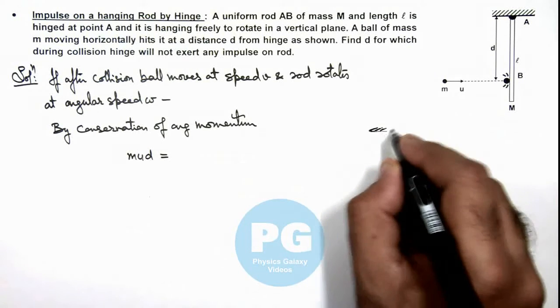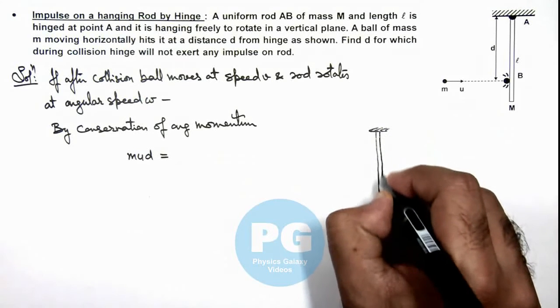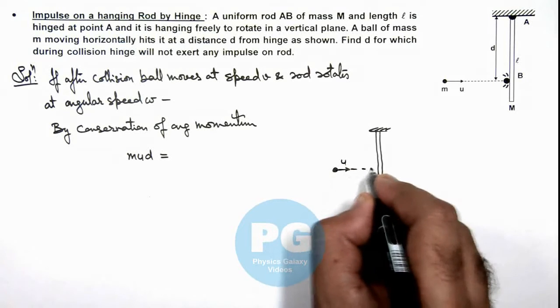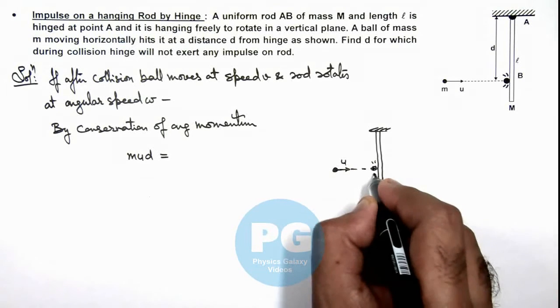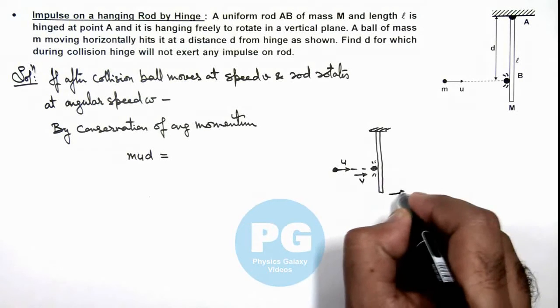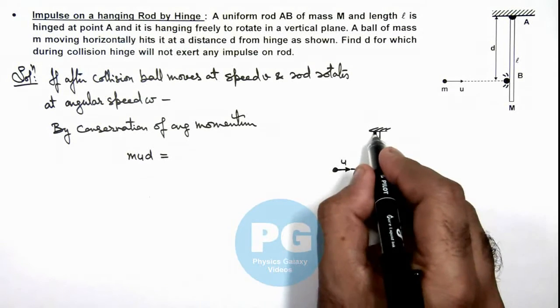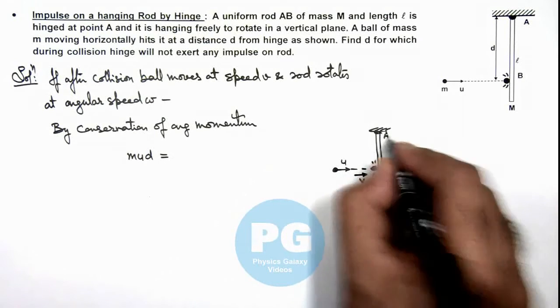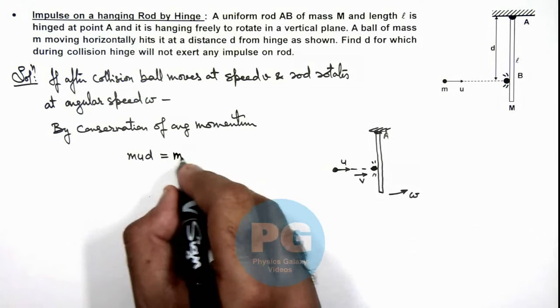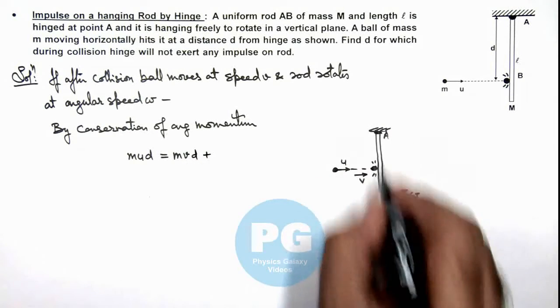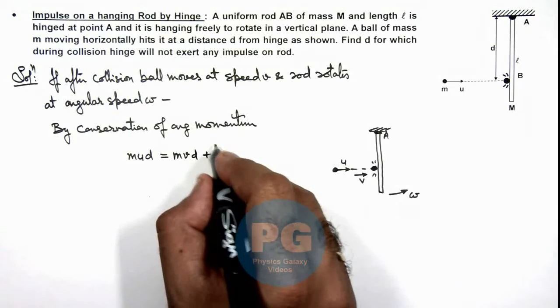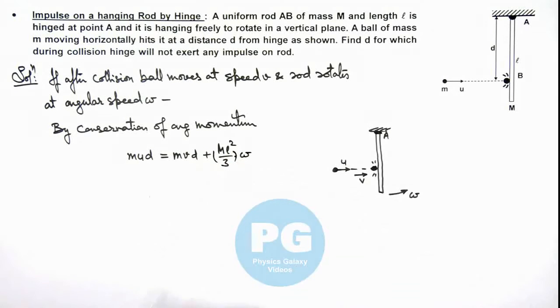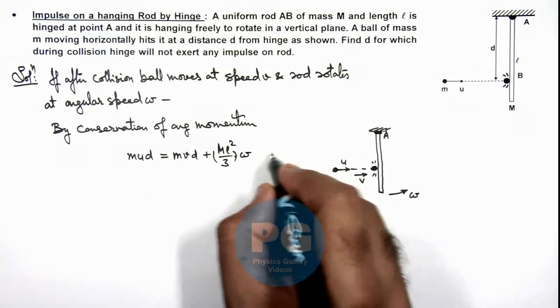We can redraw the figure to analyze. If the ball is coming at a speed u and after collision here, ball moves at speed v and rod moves at angular speed omega, then in this situation we can write the angular momentum of ball about the hinge at point A is m v d, plus that of rod will be, in this situation, m l square by 3 multiplied by omega, the angular momentum of rod about point A. Say this is our equation 1.